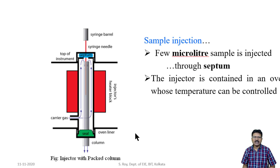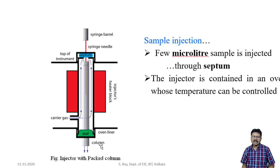A very small amount of sample is injected — normally around a microliter — through the septum using a syringe. The carrier gas carries the sample to the column. The whole sample injection part is maintained at a constant temperature normally 50 degrees higher than the highest boiling point of any component in the mixture, so that all components will be in gaseous form.